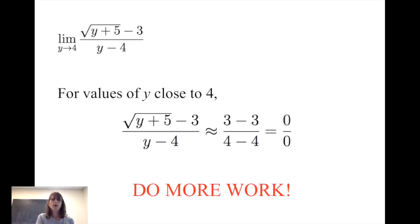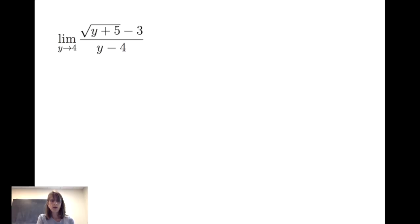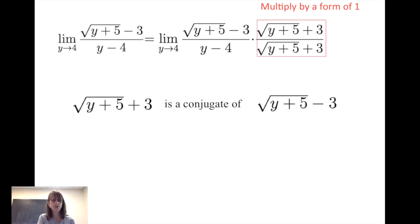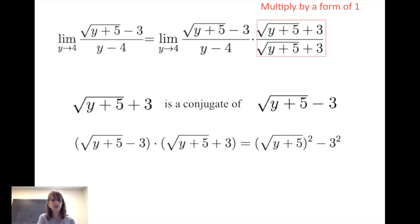In these next slides we're going to take a look at the analytical approach to the evaluation of this limit. I'm going to take the expression — the square root of y plus five minus three divided by y minus four — and multiply by a form of one: namely the square root of y plus five plus three divided by the square root of y plus five plus three. This is strategic because the square root of y plus five plus three is the conjugate of the square root of y plus five minus three, so multiplying these two factors gives a difference of squares, which simplifies very nicely.